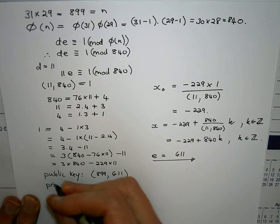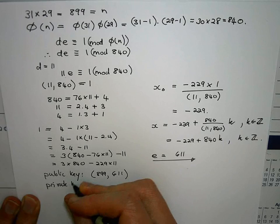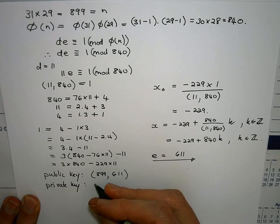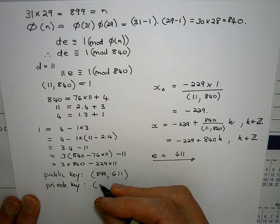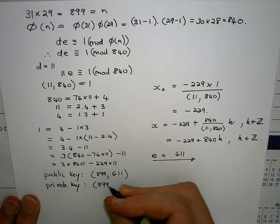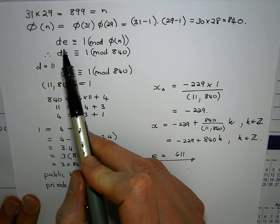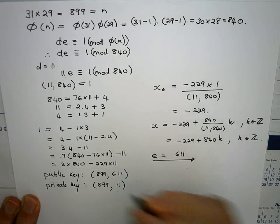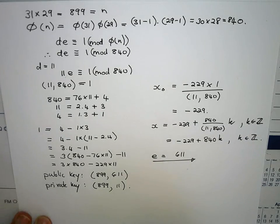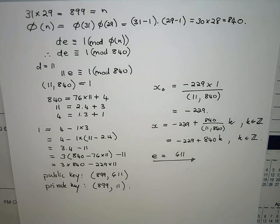The private key on the other hand is given by n again, 899, and the d which we were given to begin with which is 11. So there we have set up the cryptographic system.